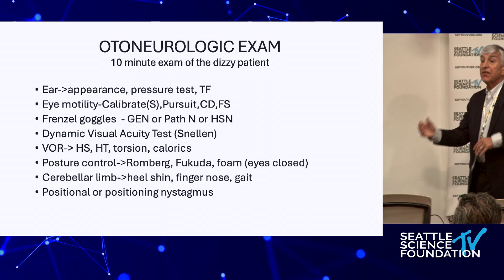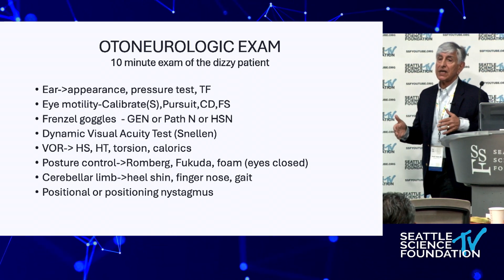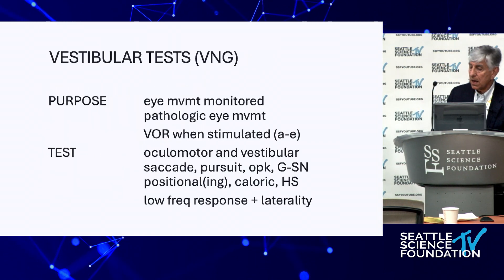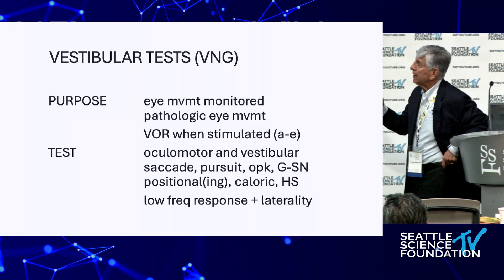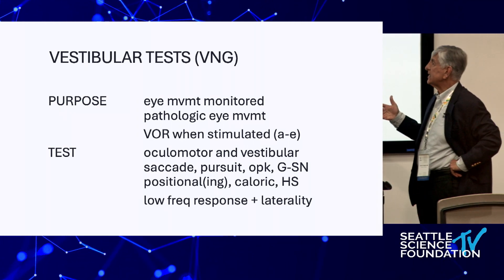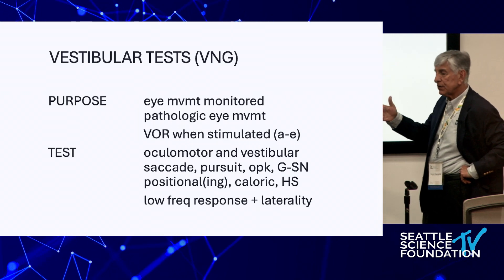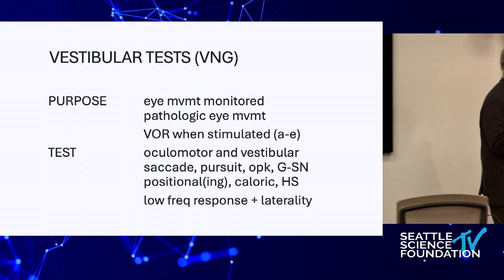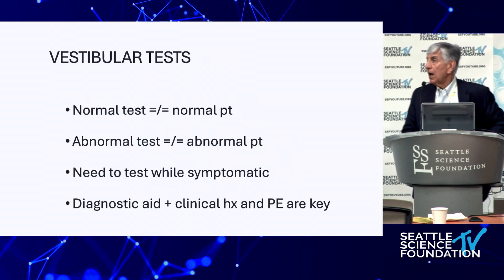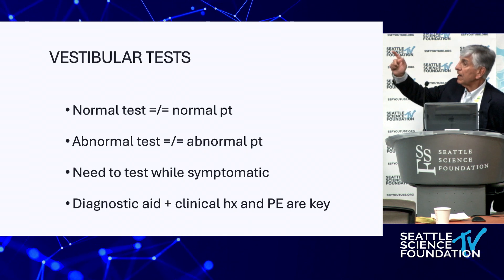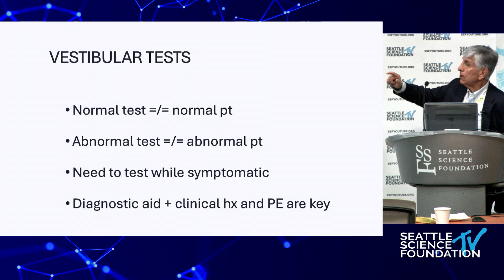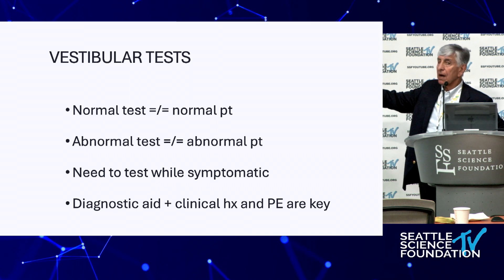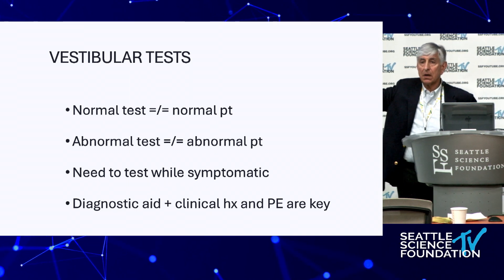For cerebellar testing I do finger-to-nose rather than heel-shin, having them try to touch my finger. The last thing I do is the Dix-Hallpike positioning and positional examination. That's essentially what a VNG is. You don't need formal testing initially. I'm pretty far down the diagnostic pathway by the time I've done the examination. Remember — a normal VNG doesn't mean you have a normal patient. The most common vestibular disorder is benign positional vertigo, which may have resolved by testing time.